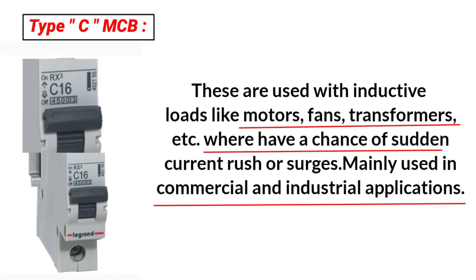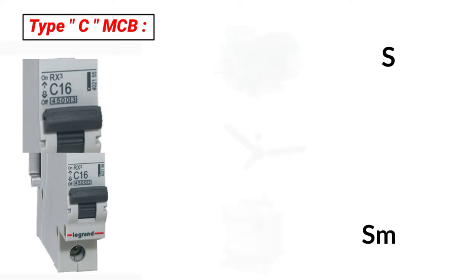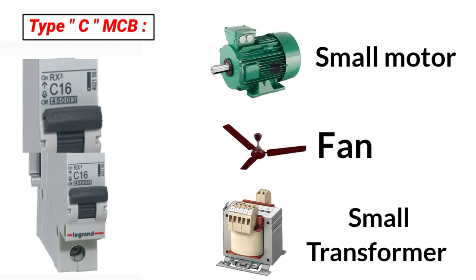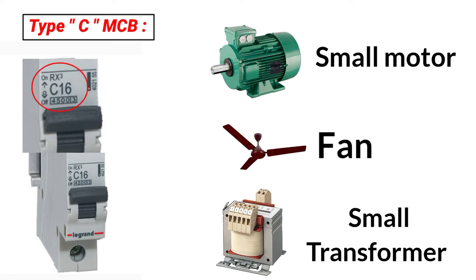Type C MCP is mainly used for commercial and industrial applications — machines, fans, motors, and transformers. In industrial settings, when a machine starts, there is a sudden rise in current.